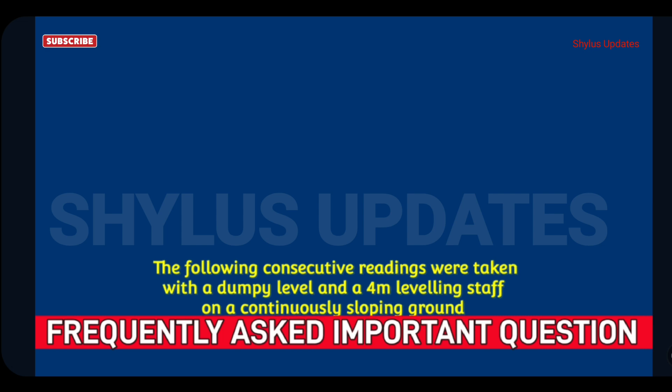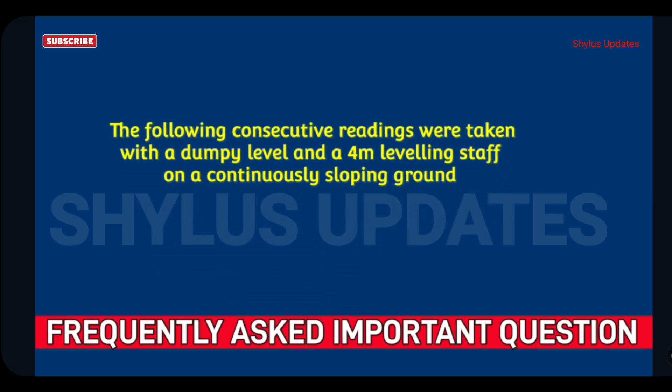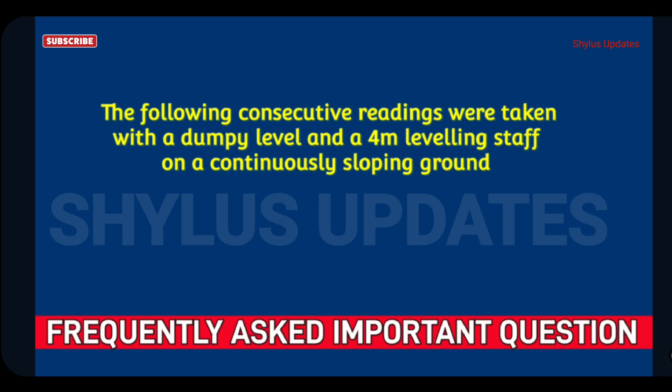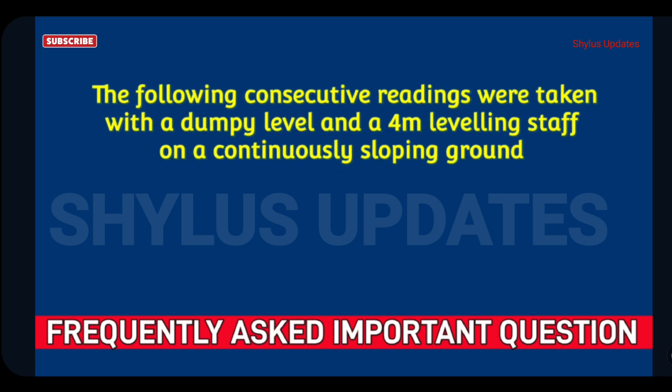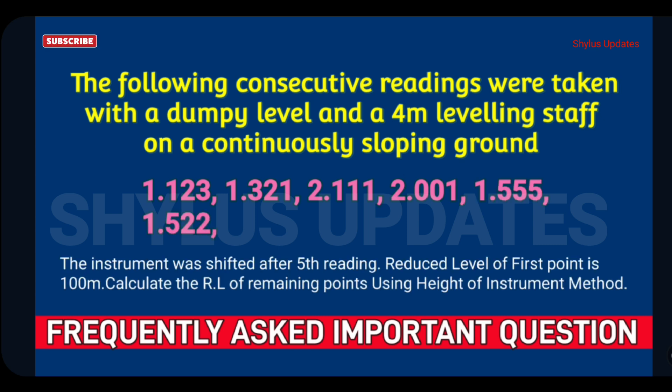The following consecutive readings were taken with a dumpy level and a 4 meter leveling staff on a continuously sloping ground. The instrument was shifted after 5th reading. Reduced level of first point is 100 meter. Calculate the reduced level of remaining points using height of instrument method.